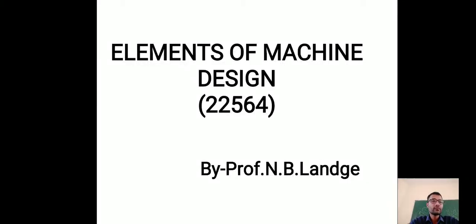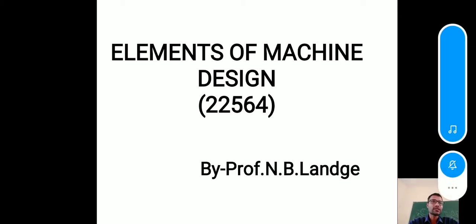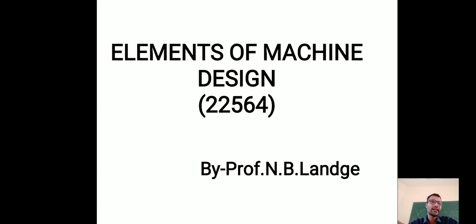Hi friends, I am N.B. Lange and again welcome you all to our subject called Elements of Machine Design, whose subject code is 22564. As you know, we are in the unit on selection of anti-friction bearings and gears. In the previous lecture, we discussed how to select a proper bearing for any particular application as per the manufacturing catalog.